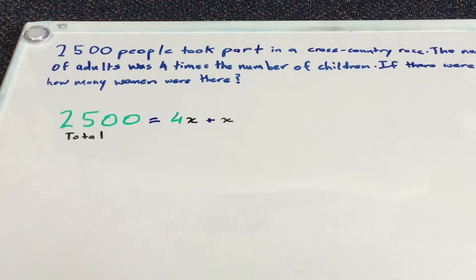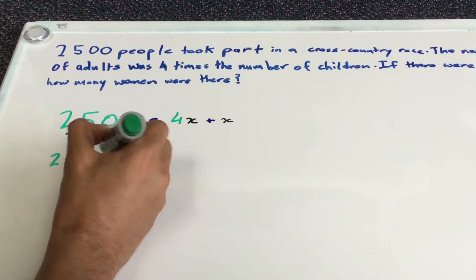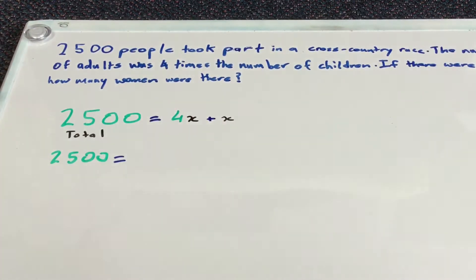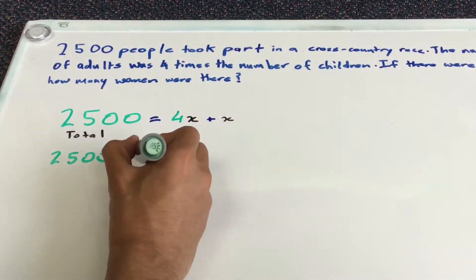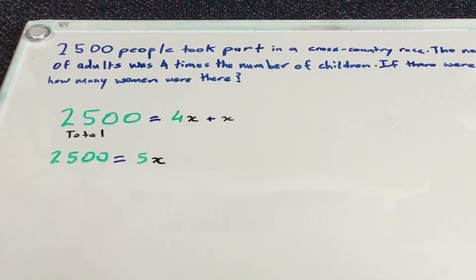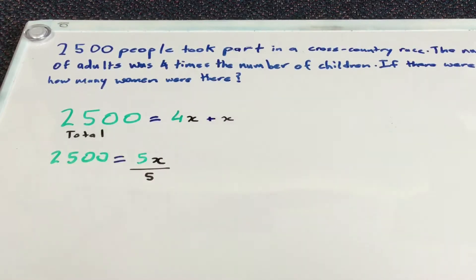So now we can solve. So 2,500 is equal to 5x. Now you have to divide by 5 to cancel out the right-hand side value, leaving it with x.